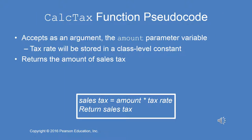The calc tax function is the only function that accepts an argument. The parameter variable will take the subtotal, and then the tax rate — which is stored in a class-level constant — is used. It simply returns the amount of sales tax, which is the subtotal times the tax rate, and that is stored in a variable in the procedure that calls it.